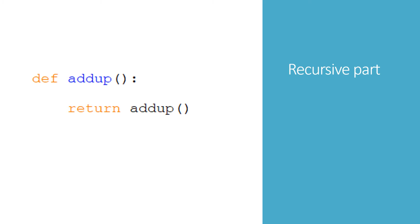It would work if I called it X or my_function, but it's good practice to call the function by a name that reminds us of what it does. Then the final line of the function will be the word return followed by the name of the function. That's the recursive part of the function.